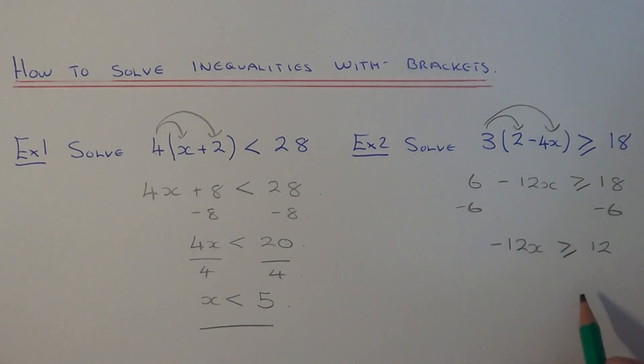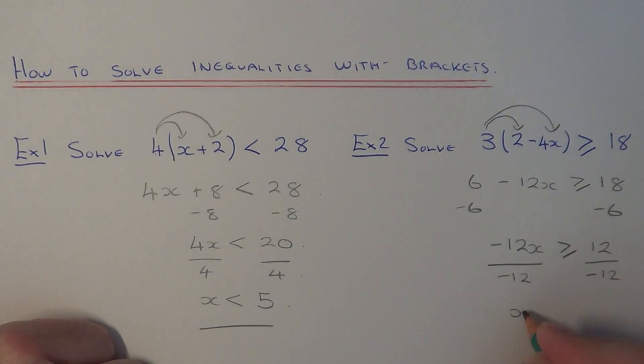So our final step then, x is now being multiplied by minus 12. So the inverse is to divide by minus 12. This is the bit where we need to remember if we're dividing or multiplying by a negative number we need to turn the inequality sign around. So this will give us x. The more than or equal to will now become less than or equal to. And 12 divided by minus 12 will give us minus 1.